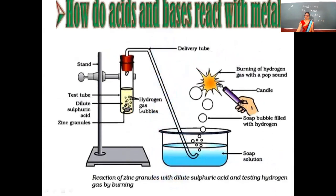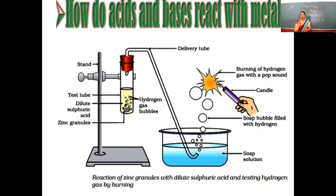Now, a question arises: how to identify the hydrogen gas involved in this reaction? The confirmation test for hydrogen is using a burning candle. When you keep the burning candle in contact with the gas bubbles — bubbles collected in soap solution — you can see that due to the hydrogen gas, there is a formation of a pop sound, like crackers. This pop sound gives us confirmation that the gas evolved is hydrogen gas. The detection test for hydrogen gas is the pop sound.